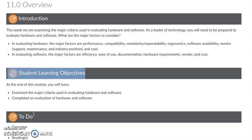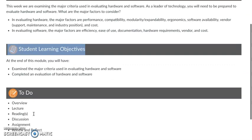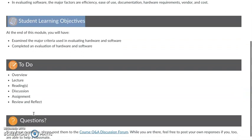So you need to be able to make a good case or argument for the software or hardware that's needed. By the end of this module, the learning objective is for you to examine those major criteria used in evaluating hardware and software and then complete an evaluation so that you can make that recommendation.